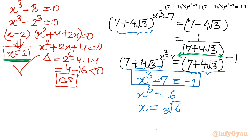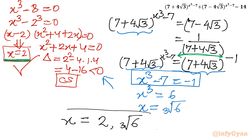The remaining two solutions from this case would be complex. So overall, the real solutions are x = 2 and x = ∛6. I hope you liked this video. Thank you so much for watching — do not forget to like, share, and subscribe. Bye-bye till the next video. Good luck and take care.